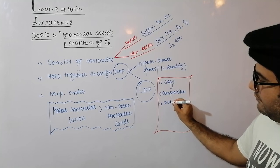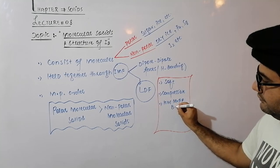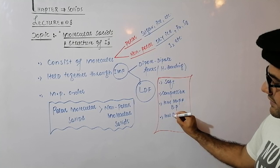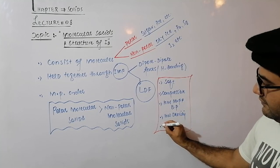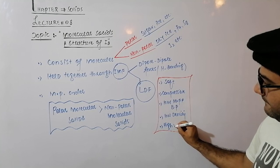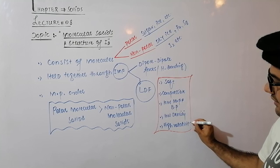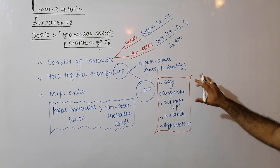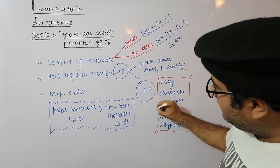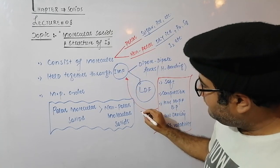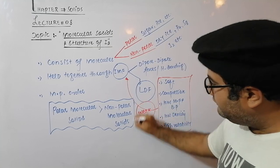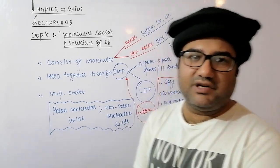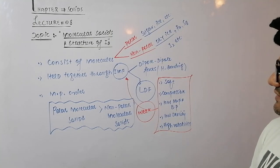Third, their melting and boiling points are low compared to ionic and covalent solids. Their density is very low, and they have high volatility compared to ionic and covalent solids. The reason for all these characteristic features is the presence of weak intermolecular forces, while ionic and covalent solids have strong ionic and covalent bonds.